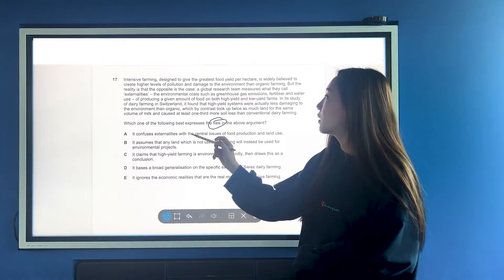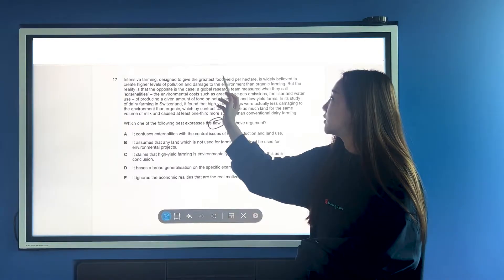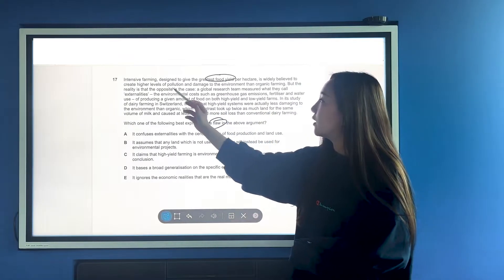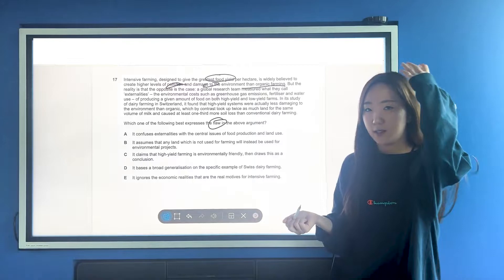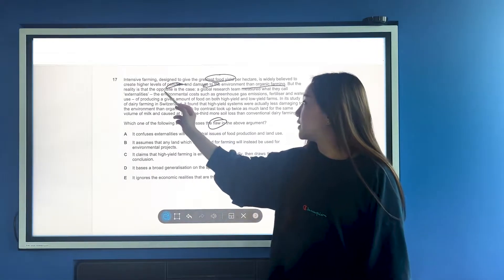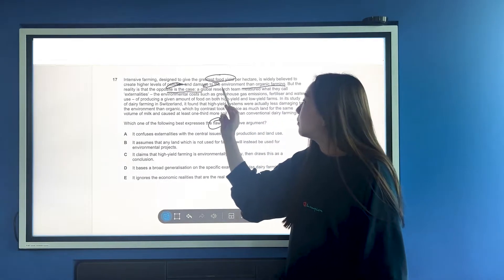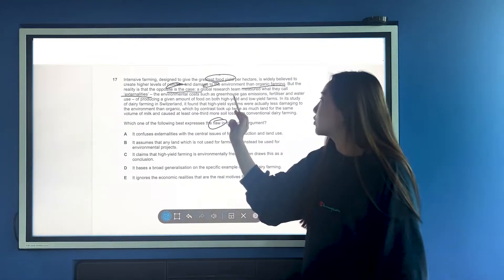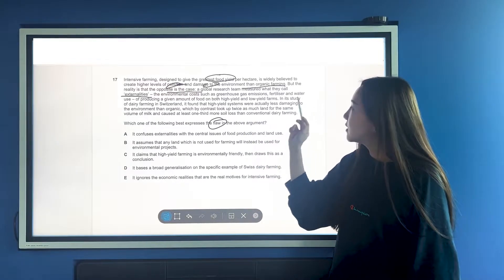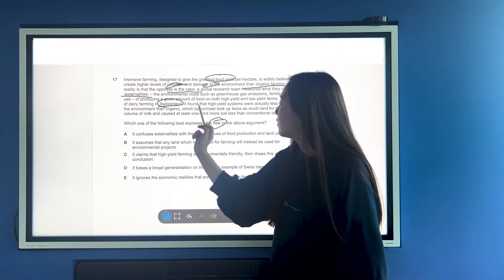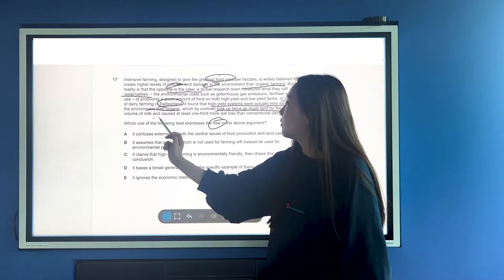Okay, so we've got another flaw question here. Again, main conclusion, argument, and then identify what the flaw could be. Intensive farming, which is going to give greatest food yield per hectare, is widely believed to create higher levels of pollution and damage than organic farming. So, we're looking at two things here, comparing them. But, the reality is the opposite is the case. In this case, we're saying organic farming is worse than the intensive, measured by externalities, environmental costs such as greenhouse gas emission, fertiliser, water use, etc. on both high-yield and low-yield farms. In its study of dairy farming in Switzerland, it found that high-yield systems were actually less damaging to the environment than organic, which, by contrast, took up twice as much land for the same volume of milk.